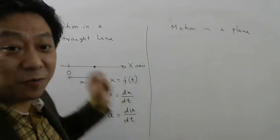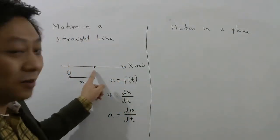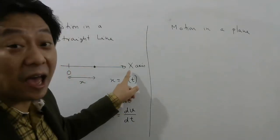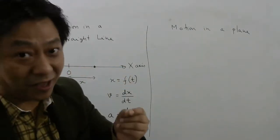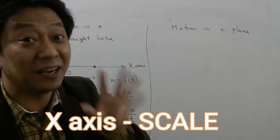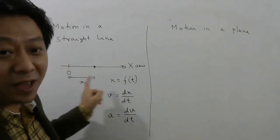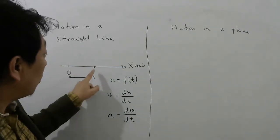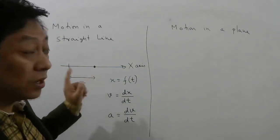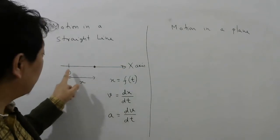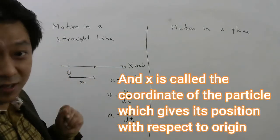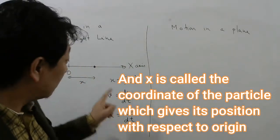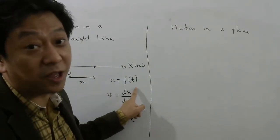When we studied motion in a straight line, we learned that the particle will be moving along a straight line and that straight line we can treat as x-axis. The x-axis is basically a scale. Every scale will have a zero, and that zero is what we call as origin. When the particle is here, we give the distance of the particle from the origin as x, and if our particle is moving, then this x-coordinate will be a function of time — as time changes, the x-coordinate will also change.